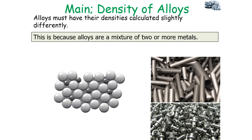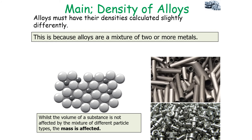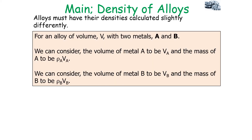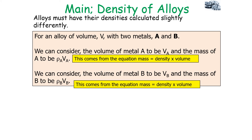Alloys must have their densities calculated slightly differently, because alloys are a mixture of two or more metals. Whilst the volume of a substance is not affected by the mixture of different particle types, the mass is affected. So we must consider the density of the different types of metals when working out the density of the alloy. For an alloy of volume V with two metals A and B, the volume of metal A is VA and the mass of A is rho_A times VA, which comes from the equation mass equals density times volume.